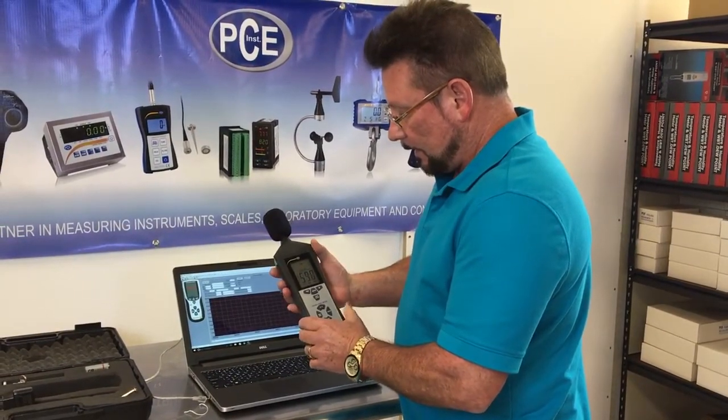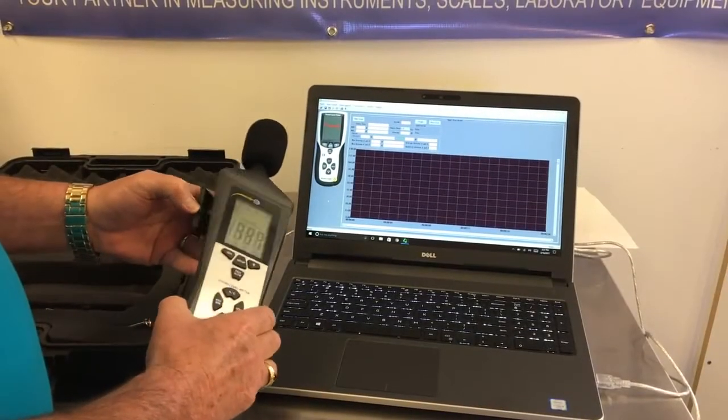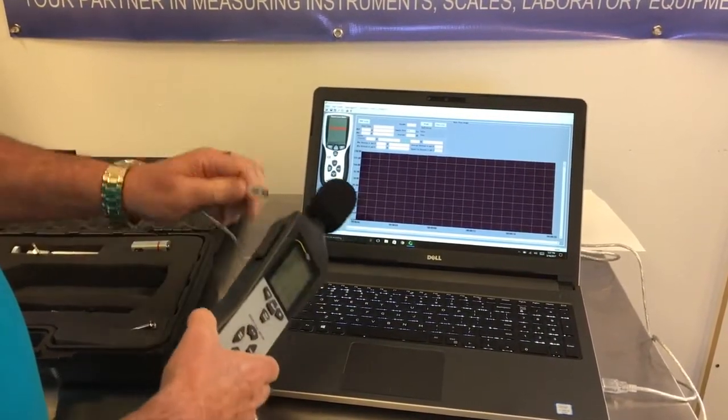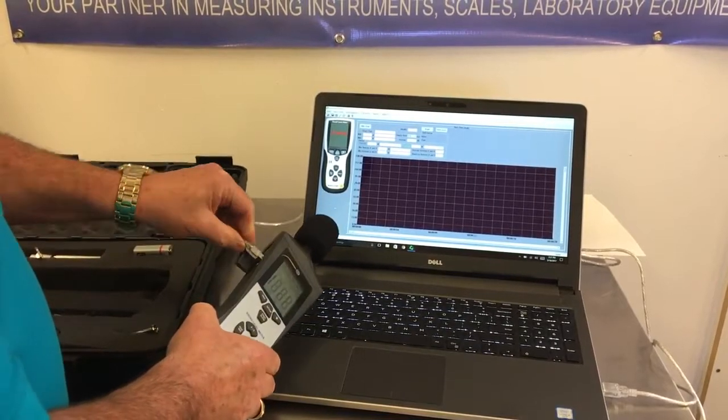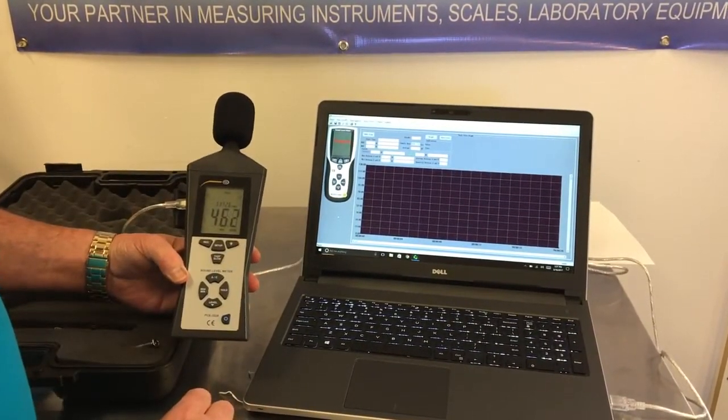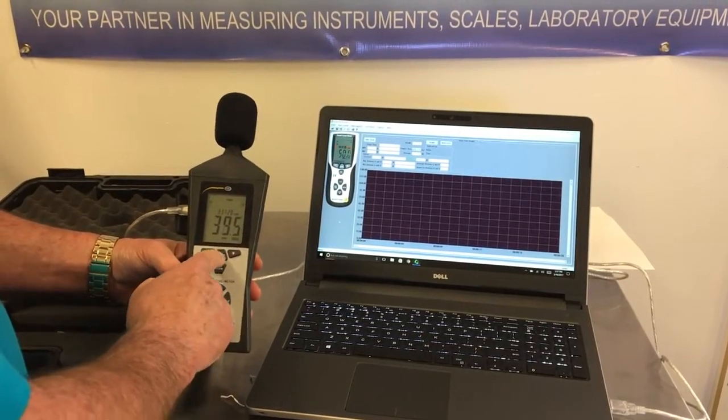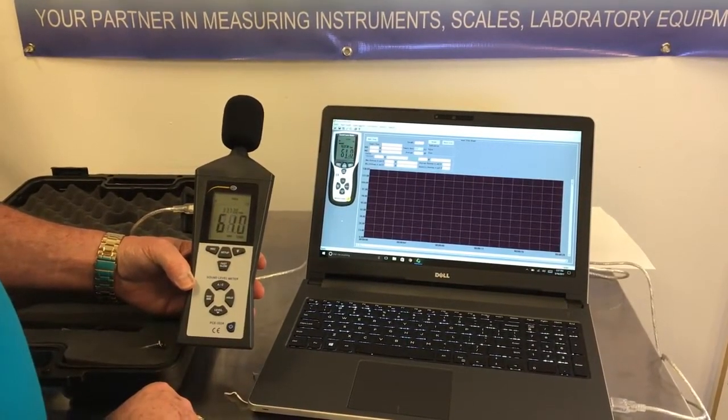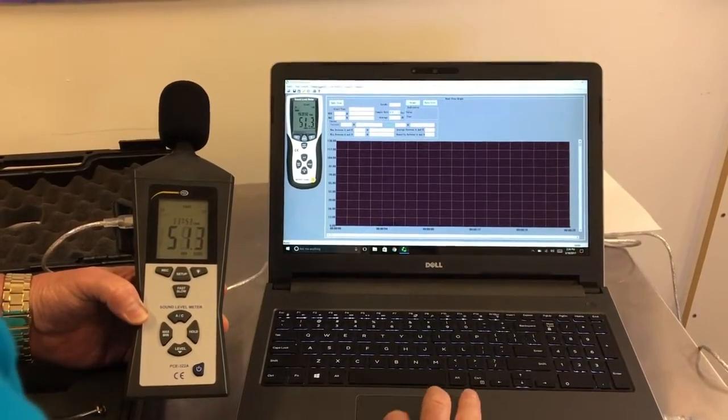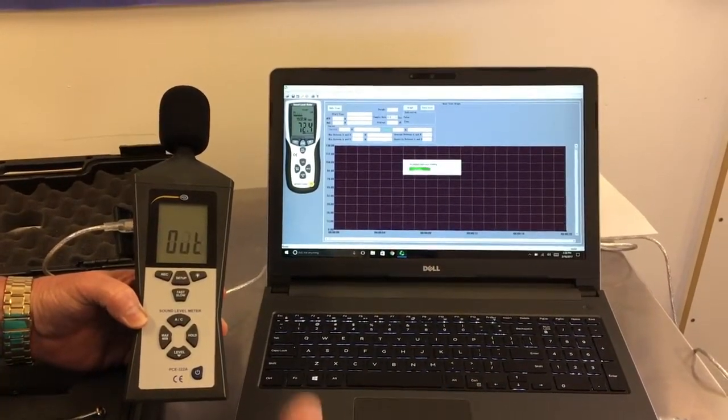The data is saved after we record. We open up the USB port. The software is already loaded. Plug in the USB cable, push setup, then we want to retrieve our information. Go to data logger loading.